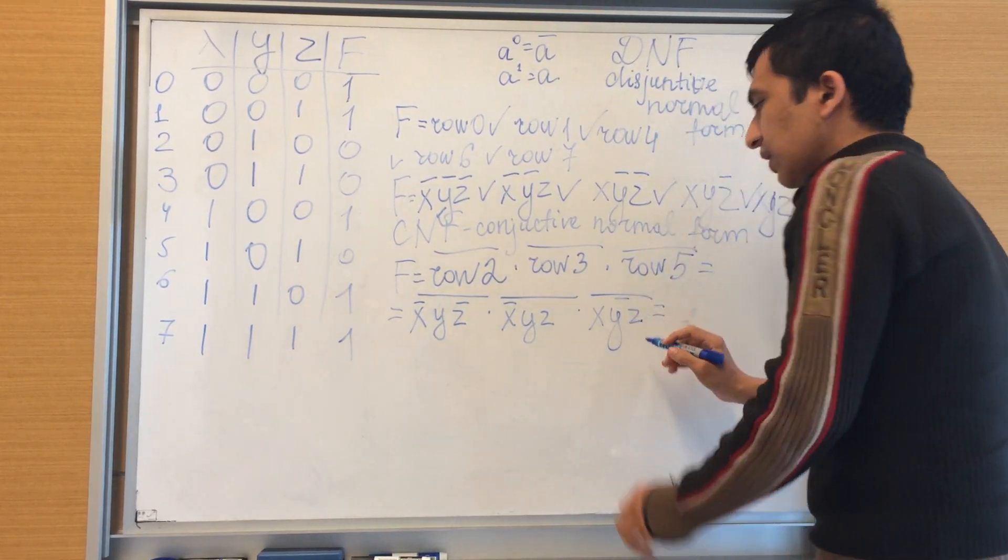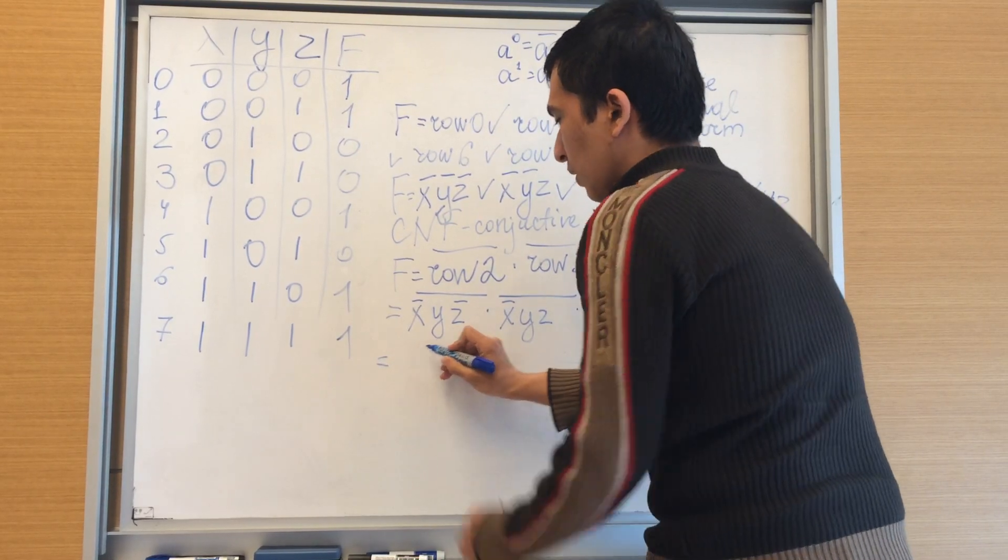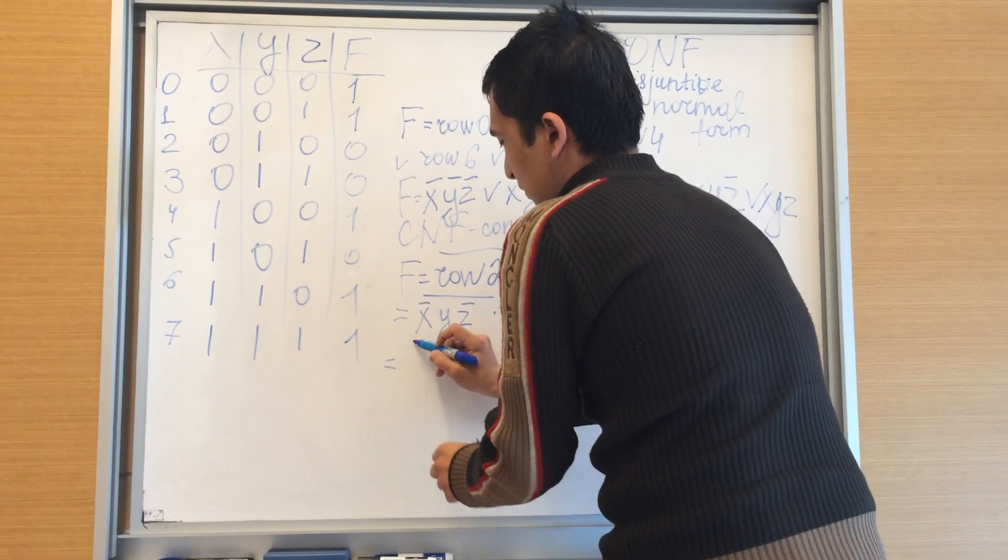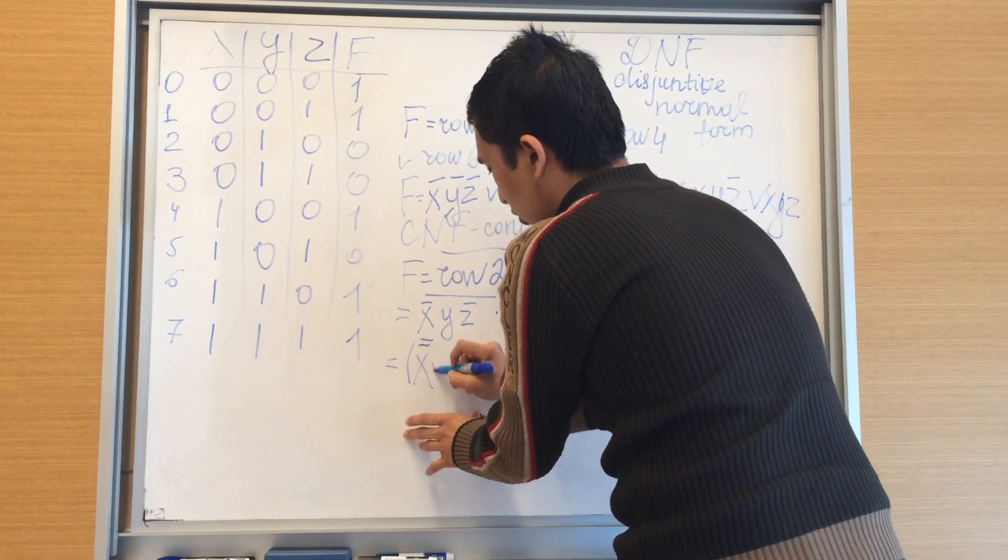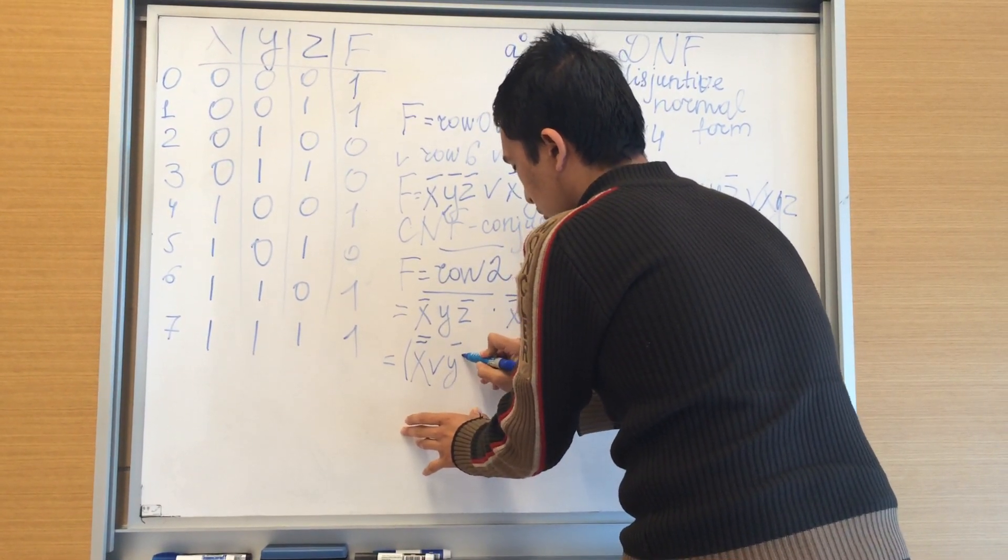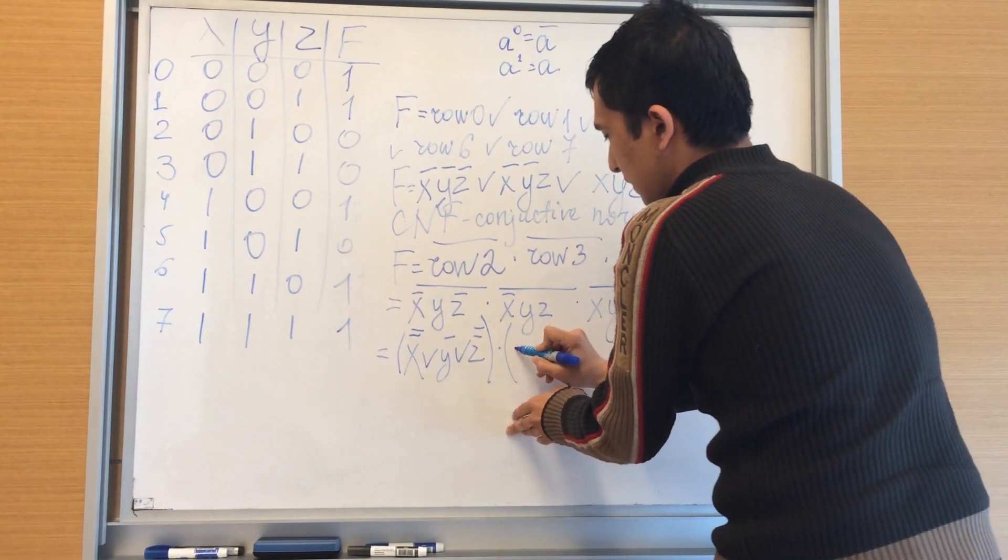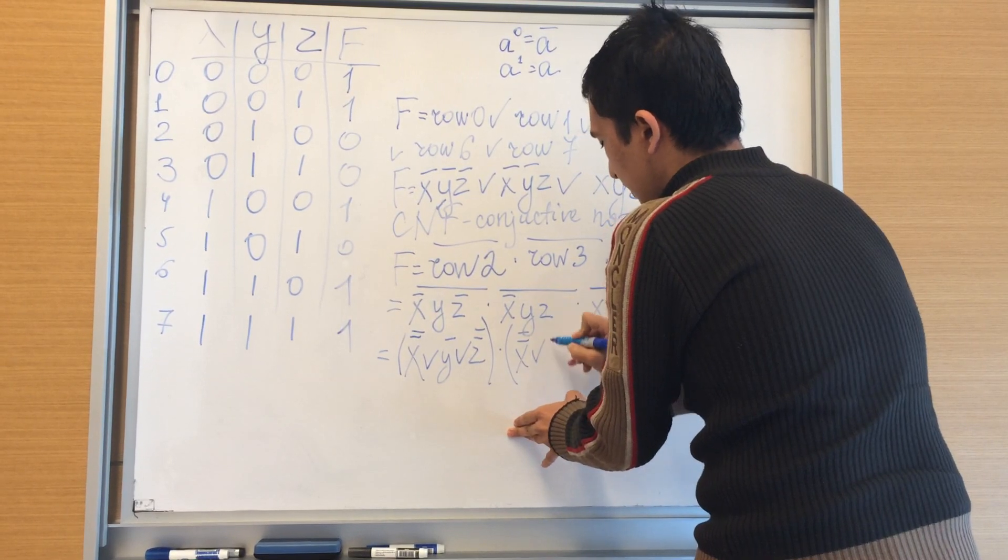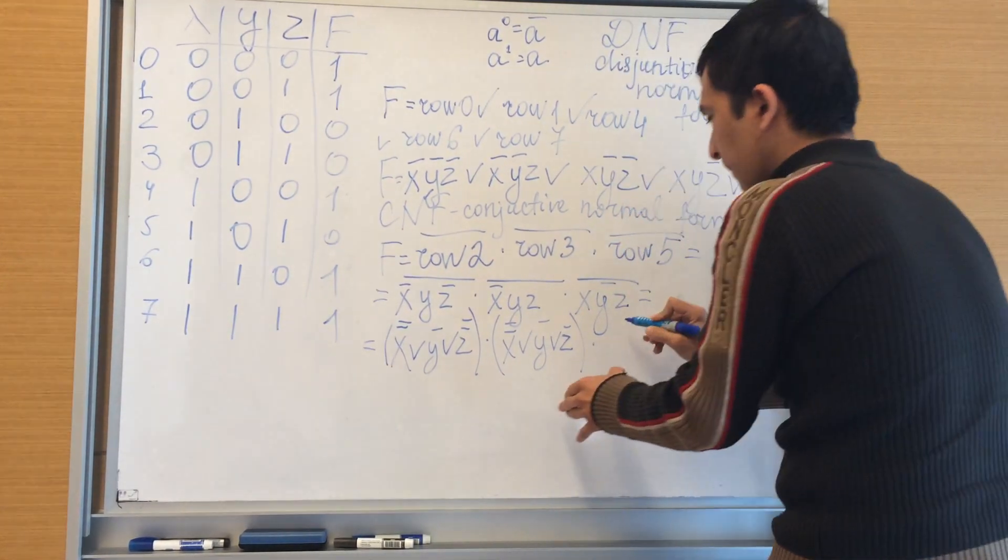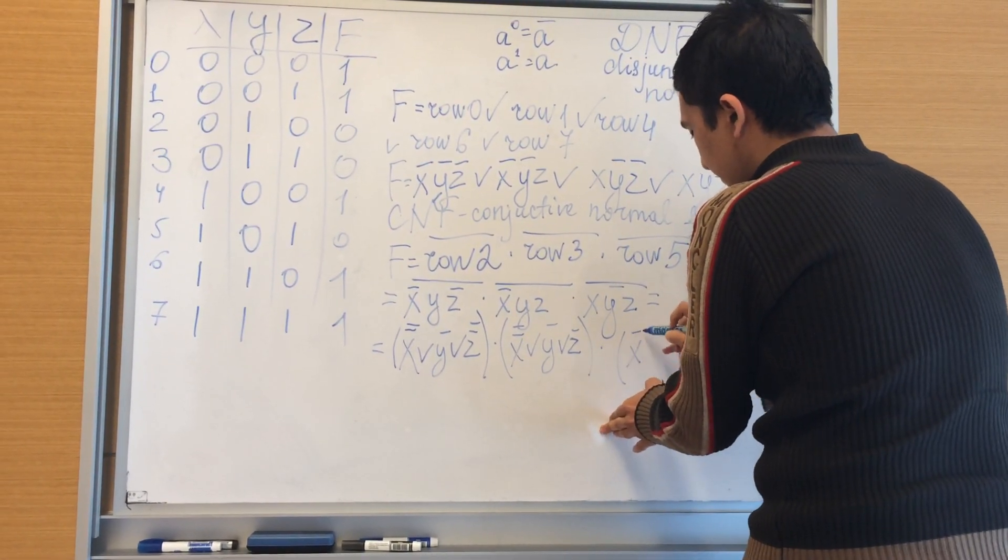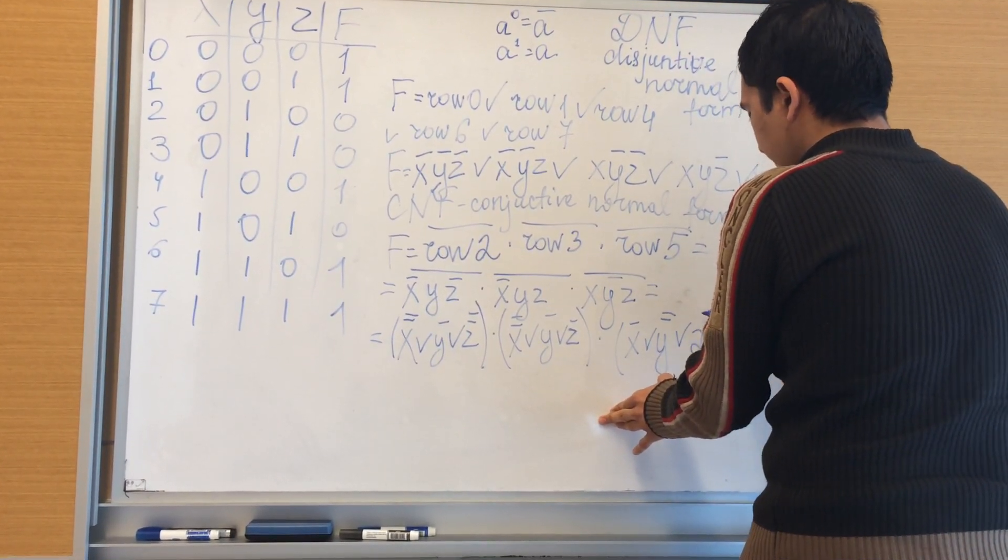For example, this expression will be like X negated negated or Y negated or Z negated negated, multiplied by Z negated negated or Y negated or Z negated, multiplied by Z negated or Y negated negated or Z negated.